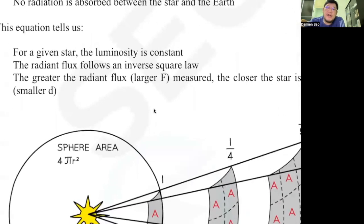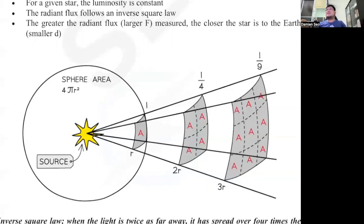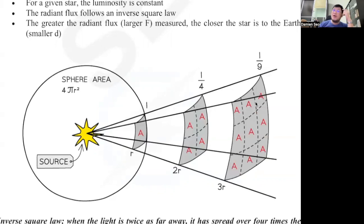We also assume it follows the inverse square law. From this diagram, you will see that the further away you are from the star, the smaller the intensity that reaches you. That's why if you are on Mercury — the closest planet to the sun — it will have the greatest intensity, and the temperature there is a few hundred degrees Celsius. As a comparison, Pluto is so far away the temperature there is negative two to three degrees Celsius. So the further away you go, the smaller the intensity — that's why it's colder.